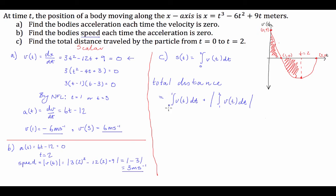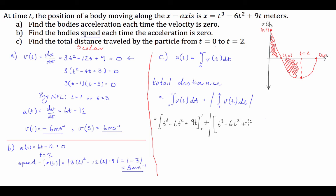What's useful is that the anti-derivative of velocity is already given in the question as the position function. So the total distance equals [t³ - 6t² + 9t] evaluated from 0 to 1, plus the absolute value of [t³ - 6t² + 9t] evaluated from 1 to 2.